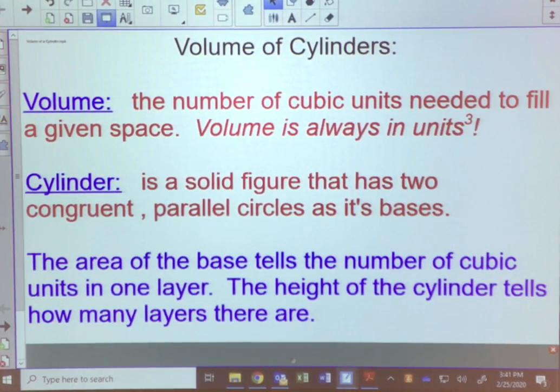When we're trying to find the volume, the area of the base gives us the number of cubic units it takes in one layer. So we find the area of a circle and that would give us how many cubic units there are in one layer. The height of that cylinder tells us how many layers there are of those cubic units.